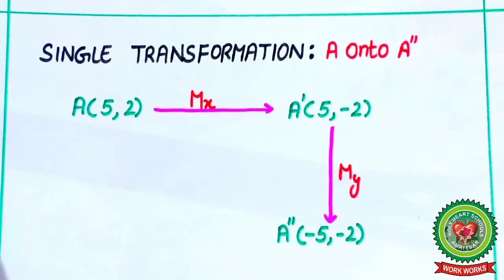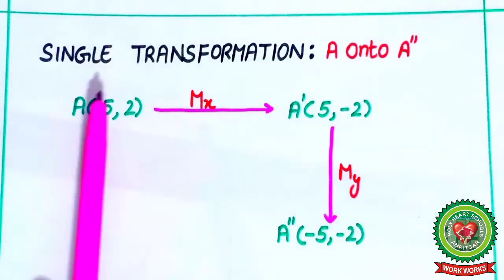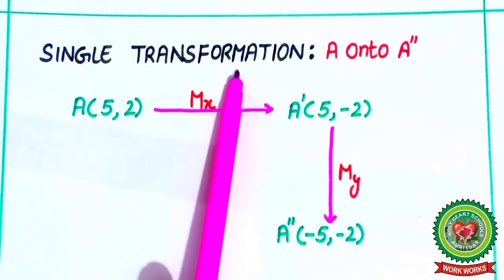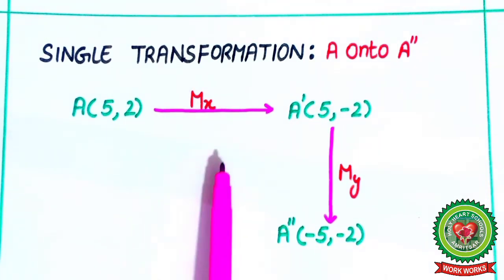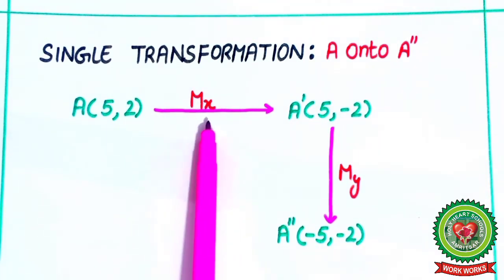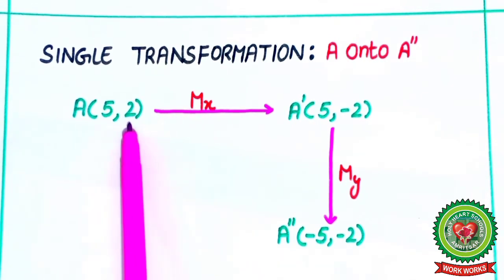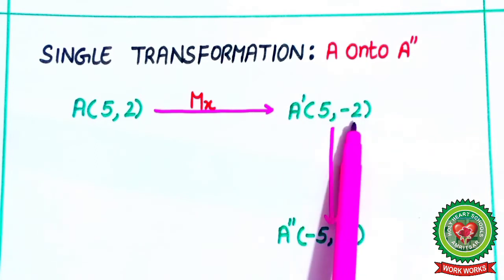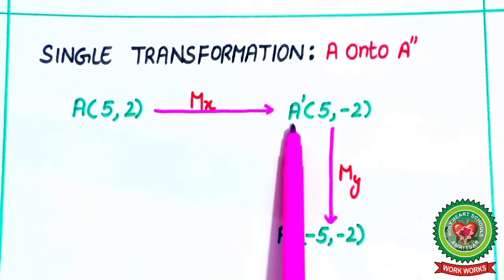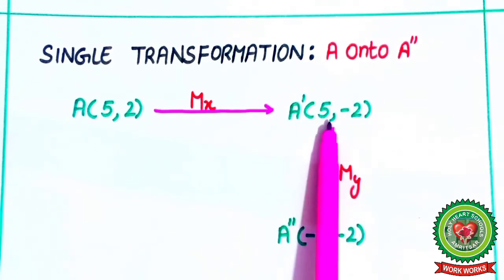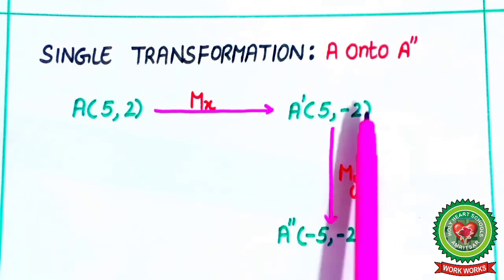First of all, what is single transformation? Here, look at the example. After reflection in x-axis, the sign of ordinate will change. So 2 will change into minus 2. So points are A' (5, -2).